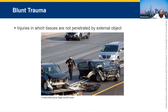Blunt trauma — there's no gunshot wound, no stabbing, usually no external bleeding. We see blunt trauma in MVAs, pedestrian struck cases, motorcycle crashes, falls from heights, and a lot of sports injuries.